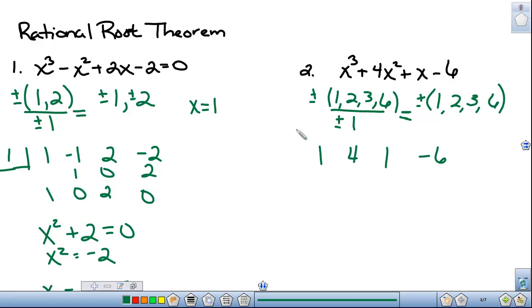And again, now I'm going to set the synthetic division problem up and choose one of these candidates at random. I guess once again I'm going to start with the number 1. I like starting with the low numbers. 1 times 1 is 1, add those together, I get 5. 1 times 5 is 5, add those together, I get 6. 1 times 6 is 6, and I add those together and I get 0. So in this case, 1 is a rational zero.